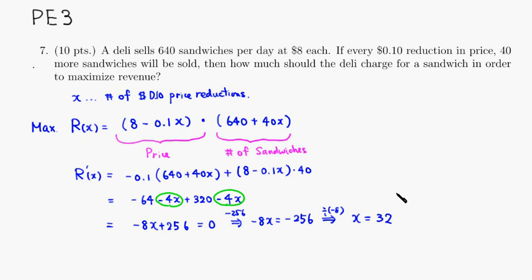Therefore, the price, price function is right here. So price we're looking for, I'll call P, is 8 minus 10 cent reduction. We're going to do 32 reductions, which means that 8 minus 3.2, which means that $4.80 is the best price to maximize the revenue.